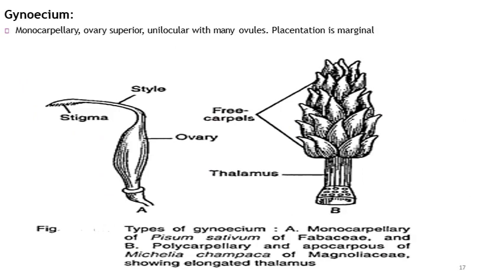Now we discuss the fourth whorl of the flower, that is the gynoecium. The gynoecium is majorly monocarpellary, meaning it consists of a single carpel. The ovary is superior, either in the case of hypogynous or perigynous condition. The ovary exhibits a single chamber, so we refer to it as unilocular. The family Fabaceae exhibits a unilocular ovary. In addition, the attachment of ovules with the ovary is marginal.